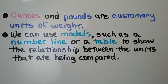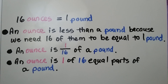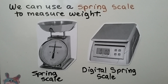16 ounces is equal to one pound. An ounce is less than a pound because we need 16 of them to equal one pound. An ounce is 1/16th of a pound — it is 1 of 16 equal parts of a pound.